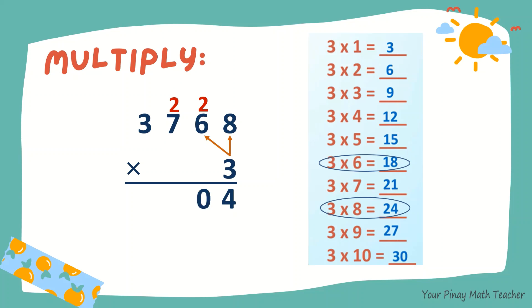So 0, carry 2. 3 times 7, 21. Plus 2, 23.